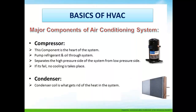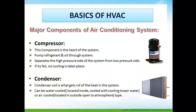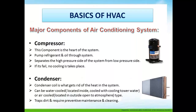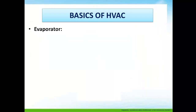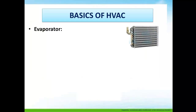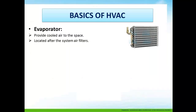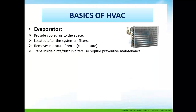The condenser coil gets rid of heat in the system. It can be water-cooled, located inside and cooled with a cooling tower, or air-cooled, located outside and open to the atmosphere. It traps dirt and requires preventive maintenance and cleaning. The evaporator provides cold air to the space, located after the air filters. It removes moisture from air and traps dust in filters, so it also requires preventive maintenance.